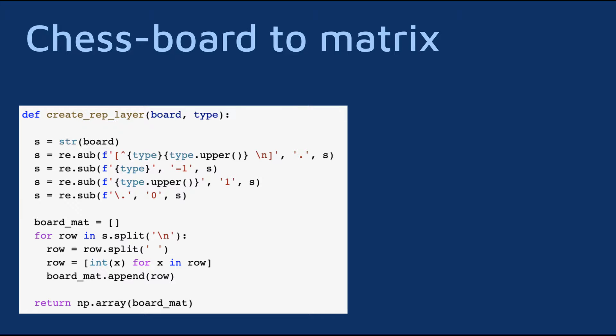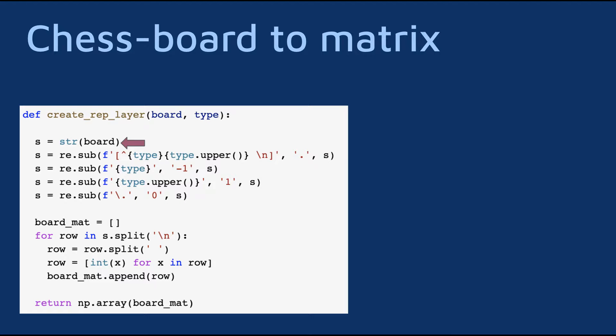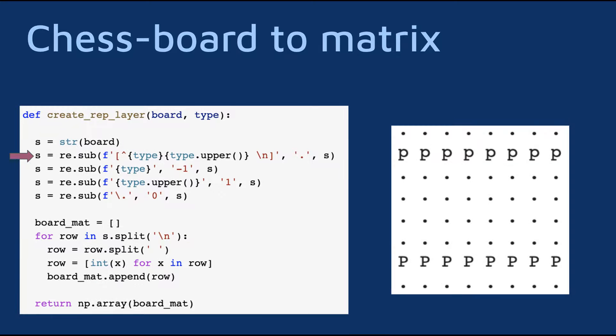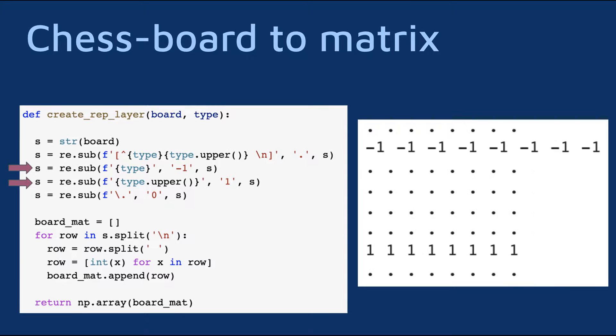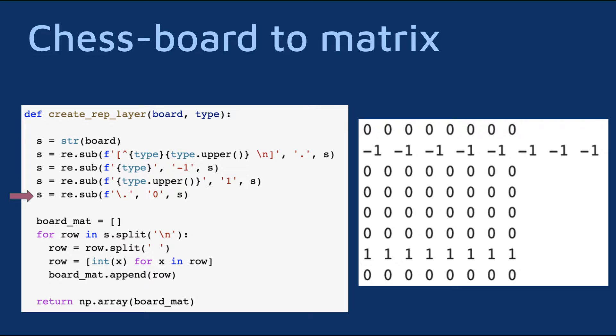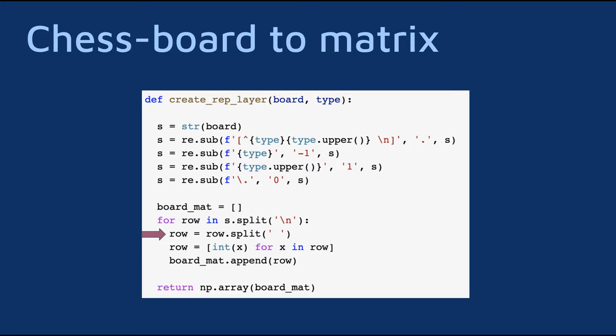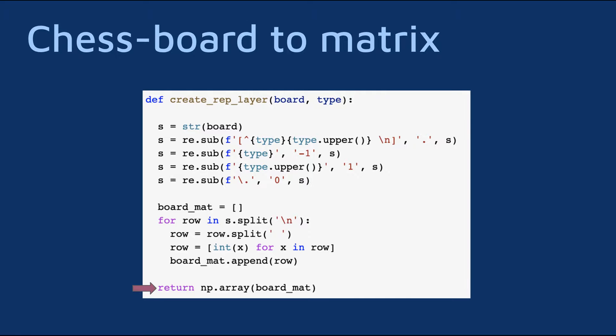Let's dive into the createRepLayer function, which takes the board and the type of piece we want to encode. The first thing the function does is to get the string representation of the board, which looks something like this. Each piece is represented by a letter, and the different colors are encoded by whether the letter is capitalized or not. Now there are 4 regex replacement operations. First, we replace anything except our desired piece and the line breaks with a dot to clear the board from anything we do not wish to encode in this feature map. Now we replace the lower letter black pieces with minus ones and the white upper ones with ones. Lastly, to create our matrix, we replace the dots with zeros. Now all that is left is to loop through the lines, split by white spaces, replace string numbers with actual integers, and stack it all into a NumPy matrix.